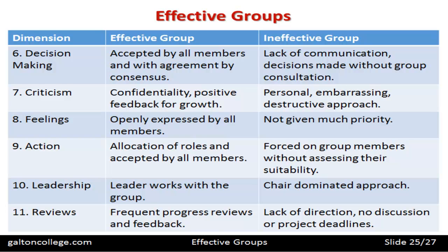For the ineffective group, reviews show a lack of direction, no discussion of project deadlines — the group is just drifting along with no milestones and no direction, working almost blindly towards the task. These are the differences between effective and ineffective groups as set out by Martin. It's a good and comprehensive list of 11 dimensions, and we can relate to all the points he made.